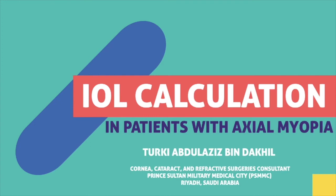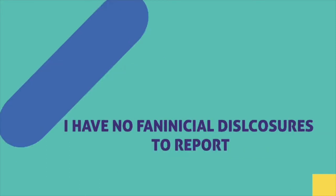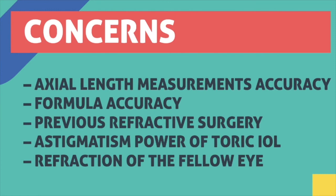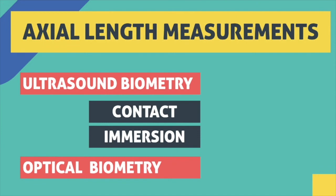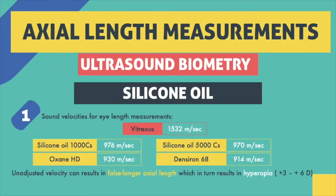Dr. Turki Ben-Dakhil now discusses IOL calculation in patients with axial myopia. When we encounter a patient with axial myopia, we should take care of the IOL power selected. Several concerns must be raised: axial length measurement accuracy, formula accuracy, the effect of high axial length on the astigmatic power of toric IOL, and whether the patient underwent refractive surgery — either corneal-based or lens-based. Axial length can be measured using ultrasound biometry, whether contact or immersion, or by optical biometry. When using ultrasound biometry in eyes filled with silicone oil, we should adjust the speed of ultrasound to avoid inaccurate axial length measurement, based on the type of silicone oil used.